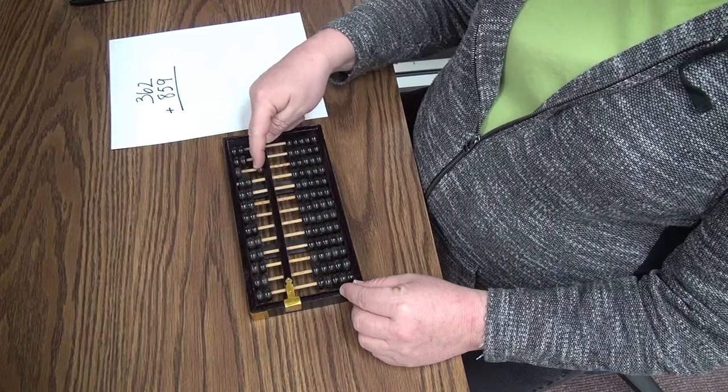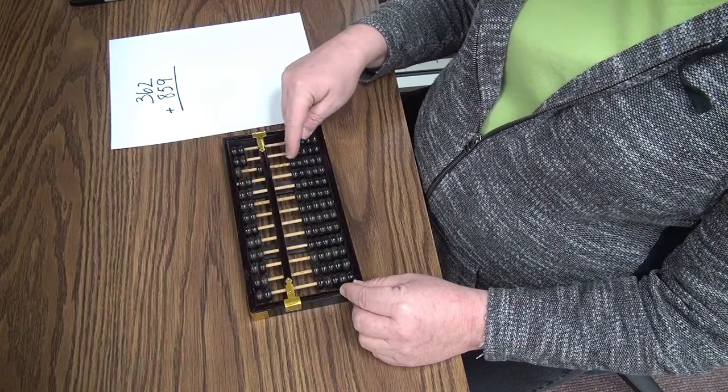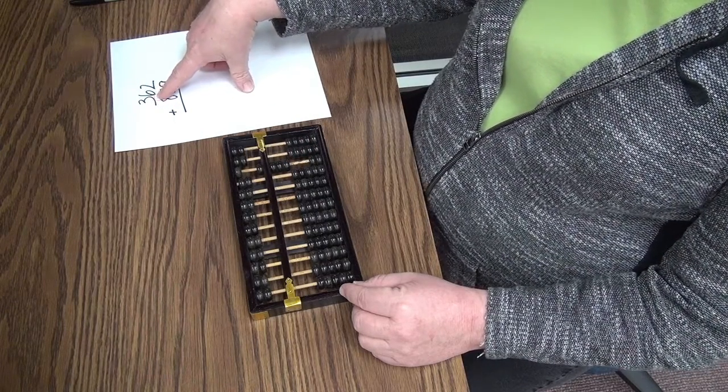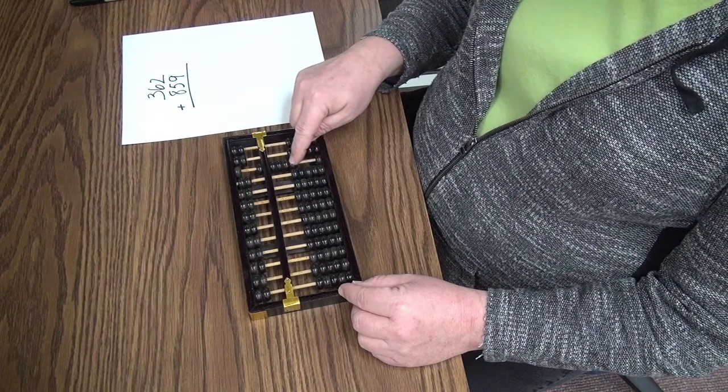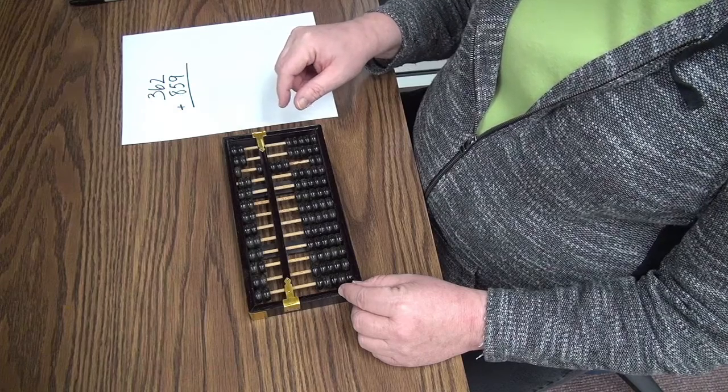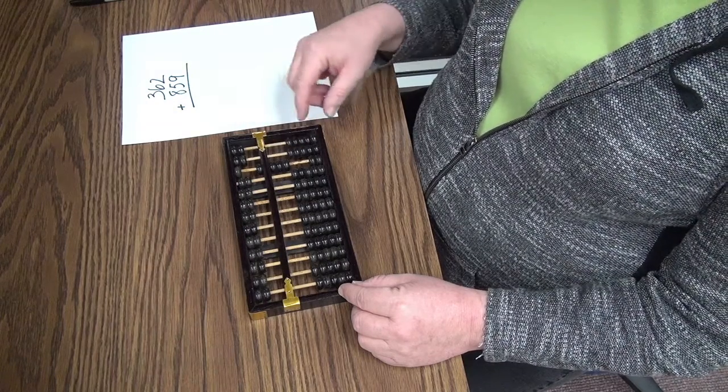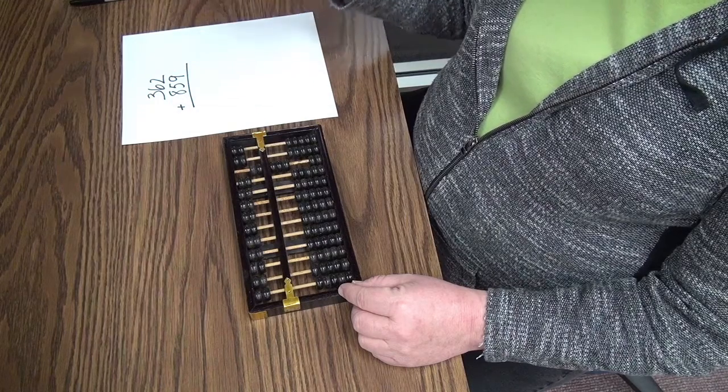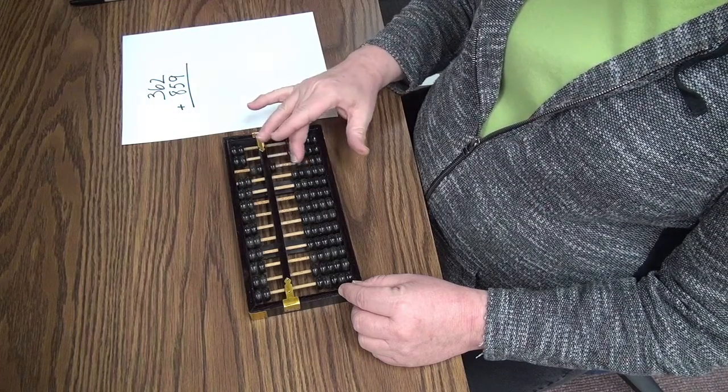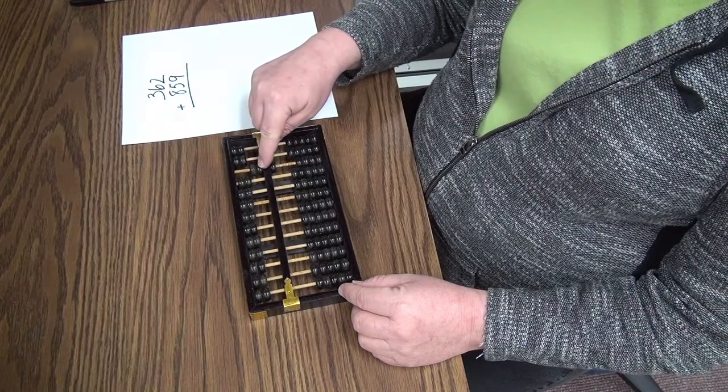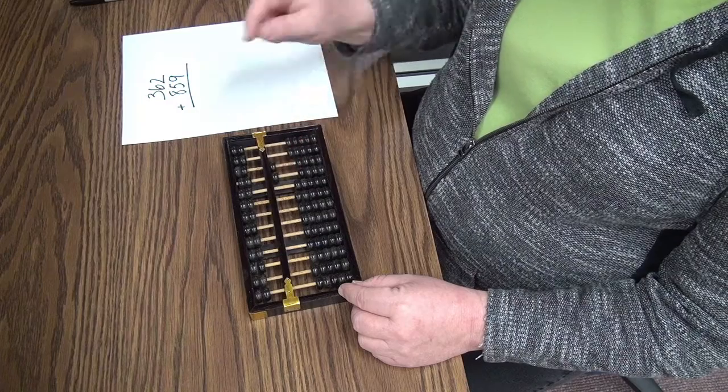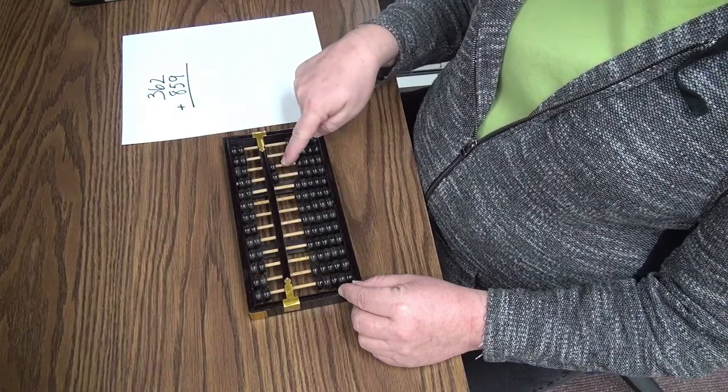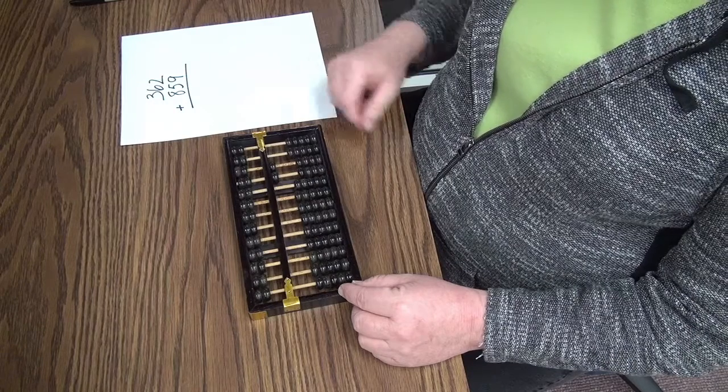So I am going to use a 500 bead, 600, 700, 800. I am going to add 300 to that. So if I am going to add 3 to the 8, I am going to add a 5, and if I add 3, then I am going to subtract 2. I am going to exchange the two 5 beads for 1,000 bead. So that gives me a total of 1,100. So 800 and 300 is 1,100.